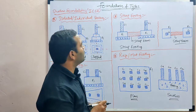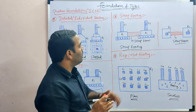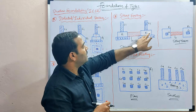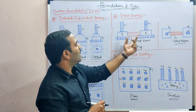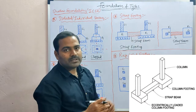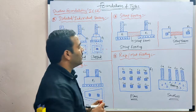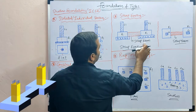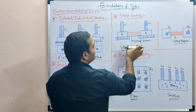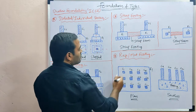Strap footing is similar to a combined footing, but here there are two single footings connected with a beam called a strap beam. This beam is connected to strengthen the two individual footings. Because of this strap beam connection, this type of footing is called strap footing. Here you can see the sectional view and the plan view.